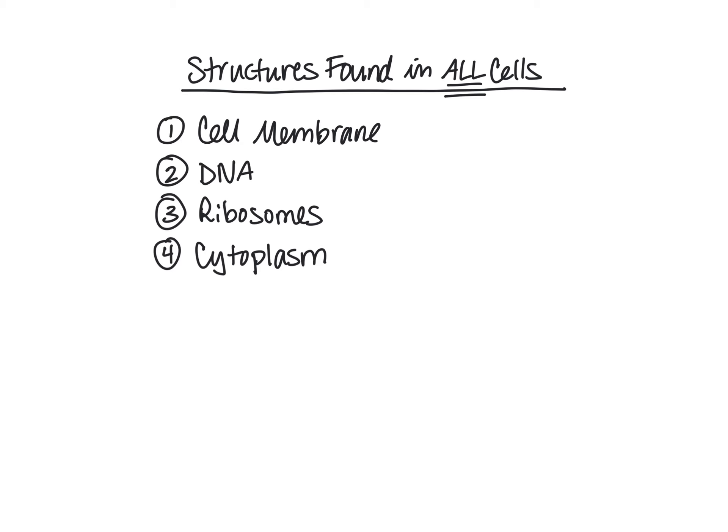There are two different classes or types of cells, and they vary in their structure and function. All cells have these four structures, but there are other organelles and structures that might be found in one type of cell versus another. On the next slide, we're going to talk about these two different types of cells and give a brief overview of the differences between them.